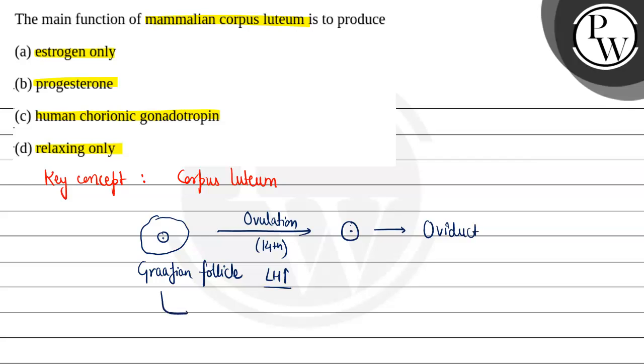Ab yaha pe jo Graafian follicle ka remnant bachta hai, toh ye convert hota hai into the corpus luteum. Aur ye corpus luteum phir further produce karta hai progesterone ko.